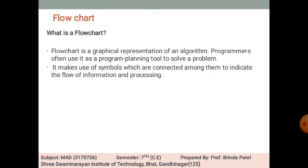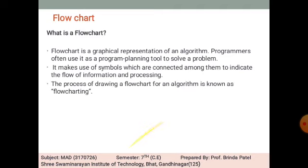A flowchart makes use of symbols which are connected among them to indicate the flow of information and processing. There are different types of symbols used, connected with one another in a sequence to represent a process. The process of drawing a flowchart for an algorithm is known as flowcharting.